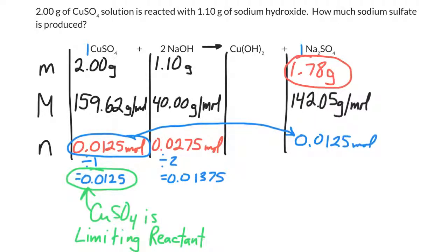So the takeaway message is: in a real reaction, you're going to have masses of both reactants and you need to figure out which one gets used up first — you have to calculate which one is the limiting reactant. Once you know which one is limiting, that is the value you use to do the rest of your stoichiometry calculations.